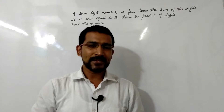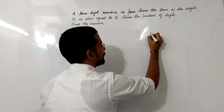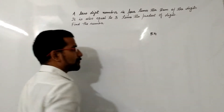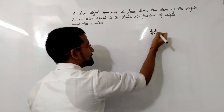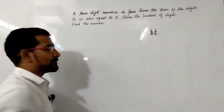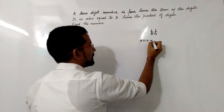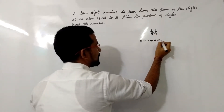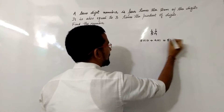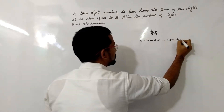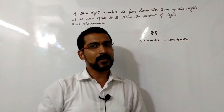As we know, in a two-digit number, for example if we take 54, the digit 5 is at the tens place and 4 is at the units place. So 5 gets multiplied by 10 and 4 gets multiplied by 1. The number form is 5 × 10 = 50, plus 4 × 1 = 4, giving us 54. This is how two-digit numbers are formed.